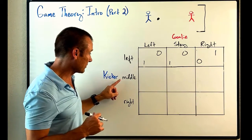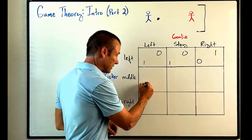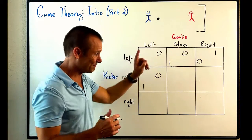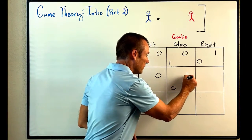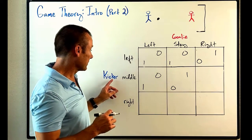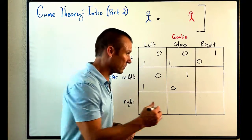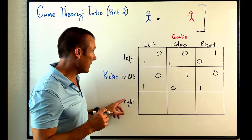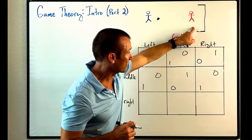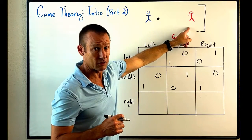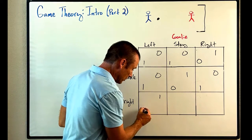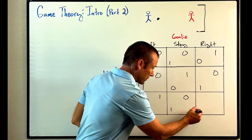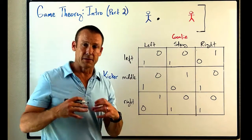Kicker kicks middle, goalie jumps left — kicker gets the point, nothing for the goalie. Kicker kicks middle, goalie stays in the middle — the goalie blocks it, so that goes to the goalie. Kicker kicks middle, goalie jumps right — kicker gets the point, nothing for the goalie. Kicker kicks right, goalie jumps left — remember, kicker kicks to their right and goalie jumps to their left, so the goalie saves it: point for the goalie, nothing for the kicker. The final two: kicker gets the point, nothing for the goalie, and kicker gets the point, nothing for the goalie.